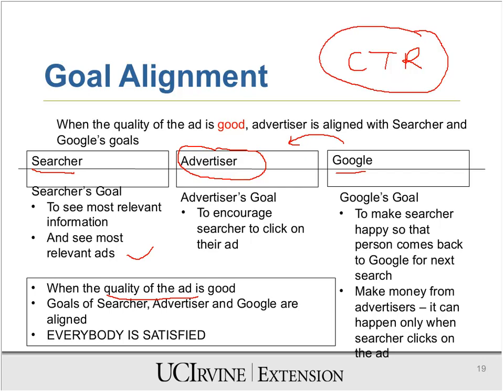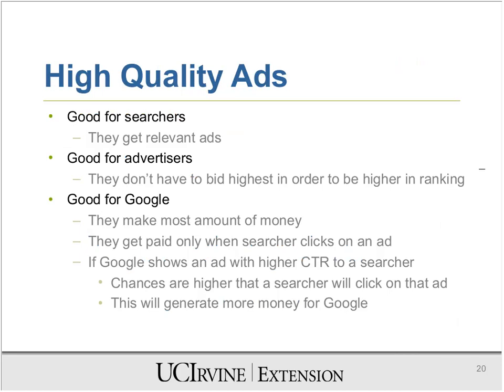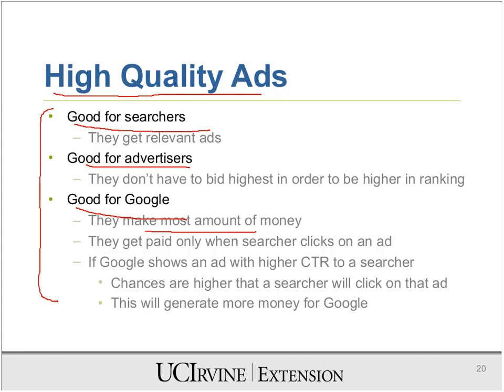This is why Google's ads work very well. If you provide a very high-quality ad, it's good for the searcher because they get the right information, good for the advertiser because people click on the ad and they can sell whatever they're selling — and their cost per click will go down as more people click. And of course it's good for Google because they make the most amount of money that way. It's good for all three parties, and that's why Google AdWords works extremely well.